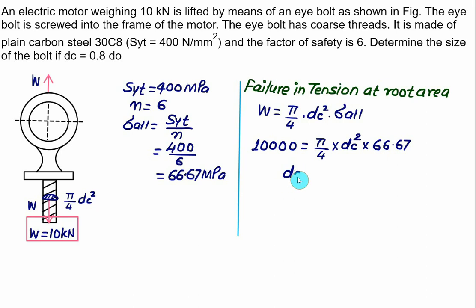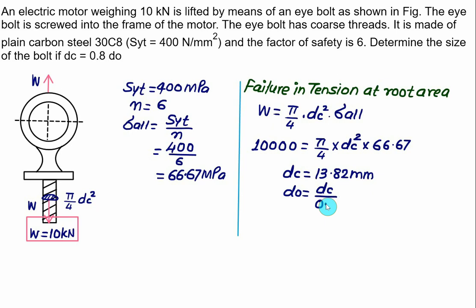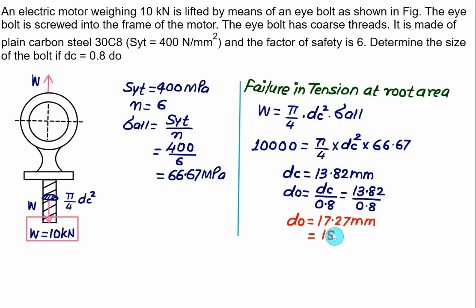From this, core diameter DC = 13.82 mm. Given DC = 0.8 × D0, the nominal diameter D0 = 13.82 / 0.8 = 17.27 mm. The standard value close to this is 18 mm, so we select bolt size M18.